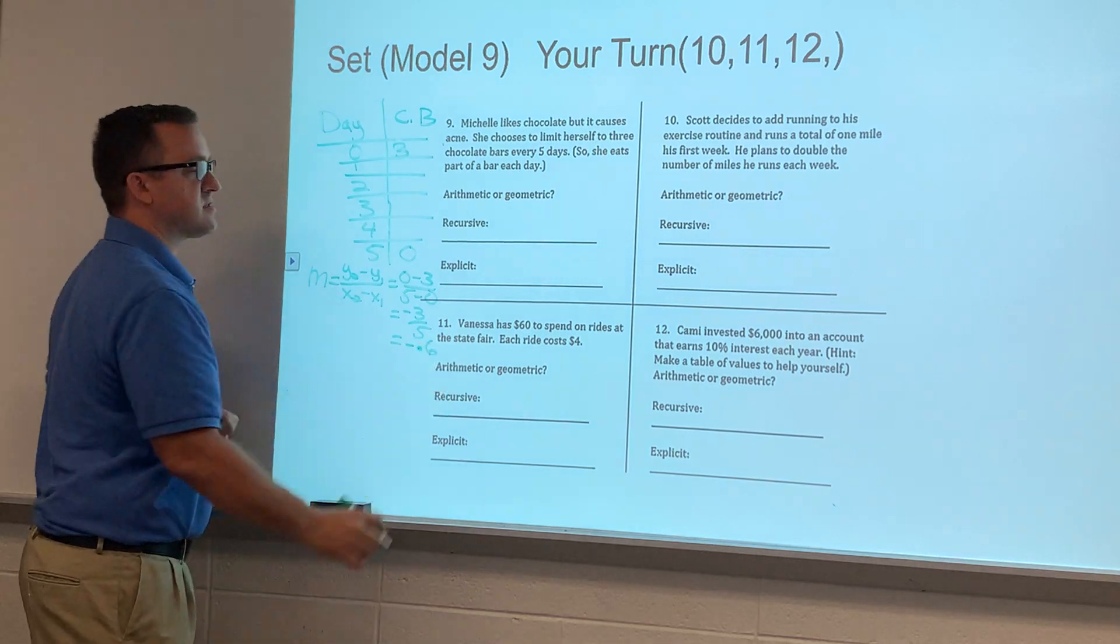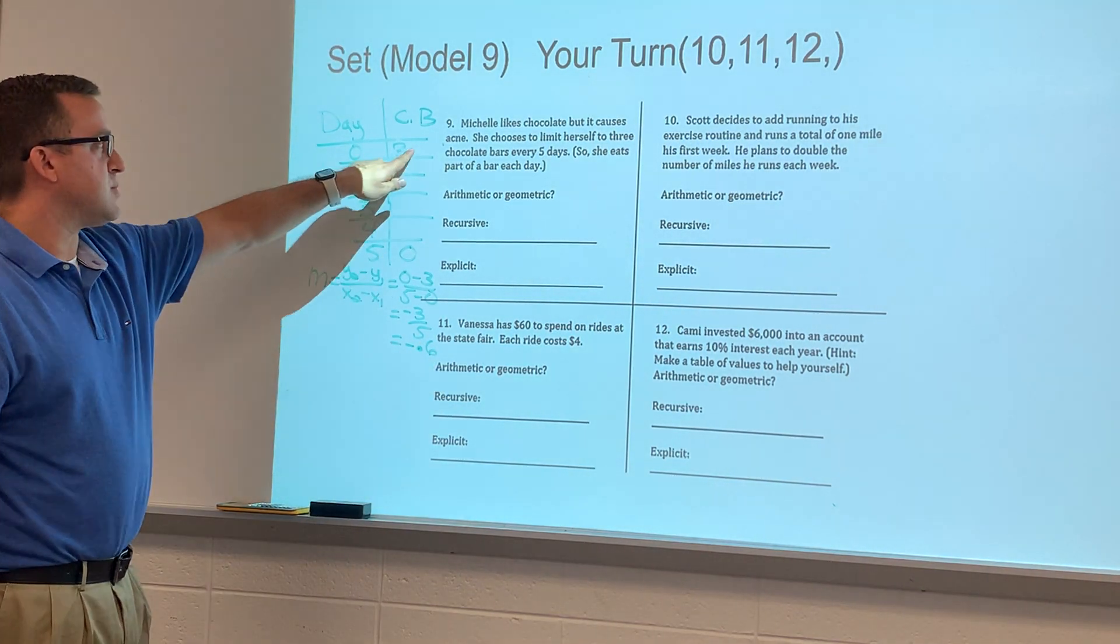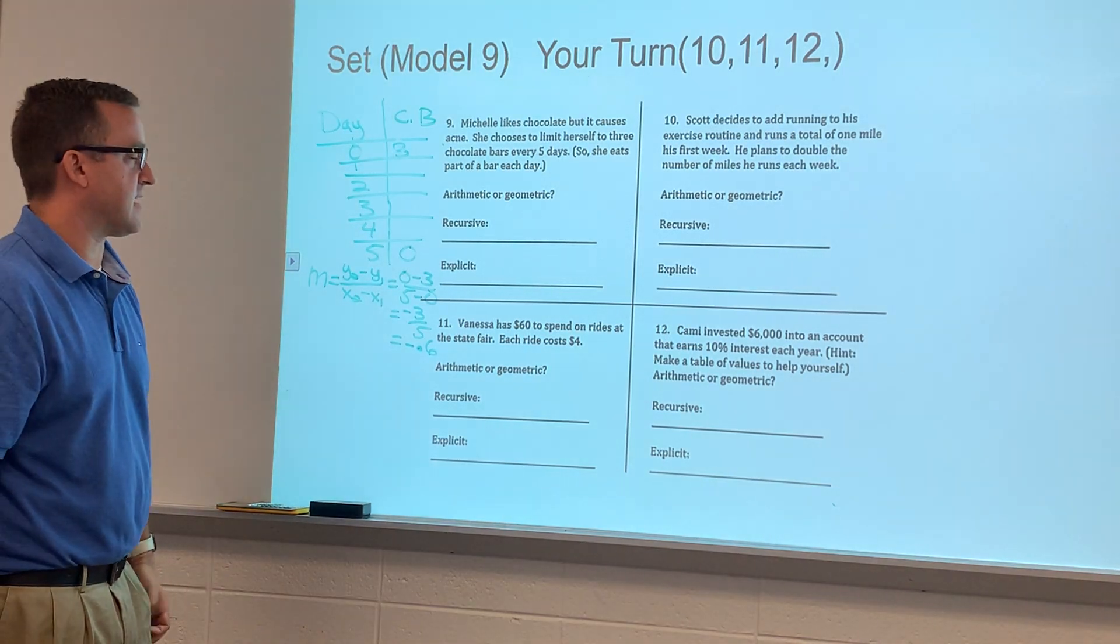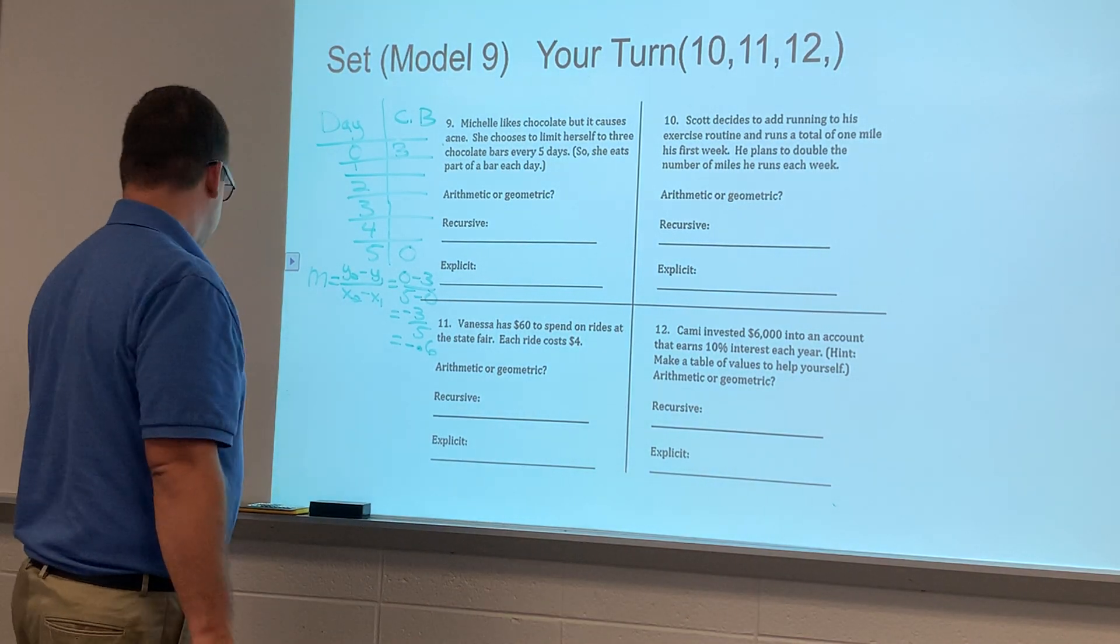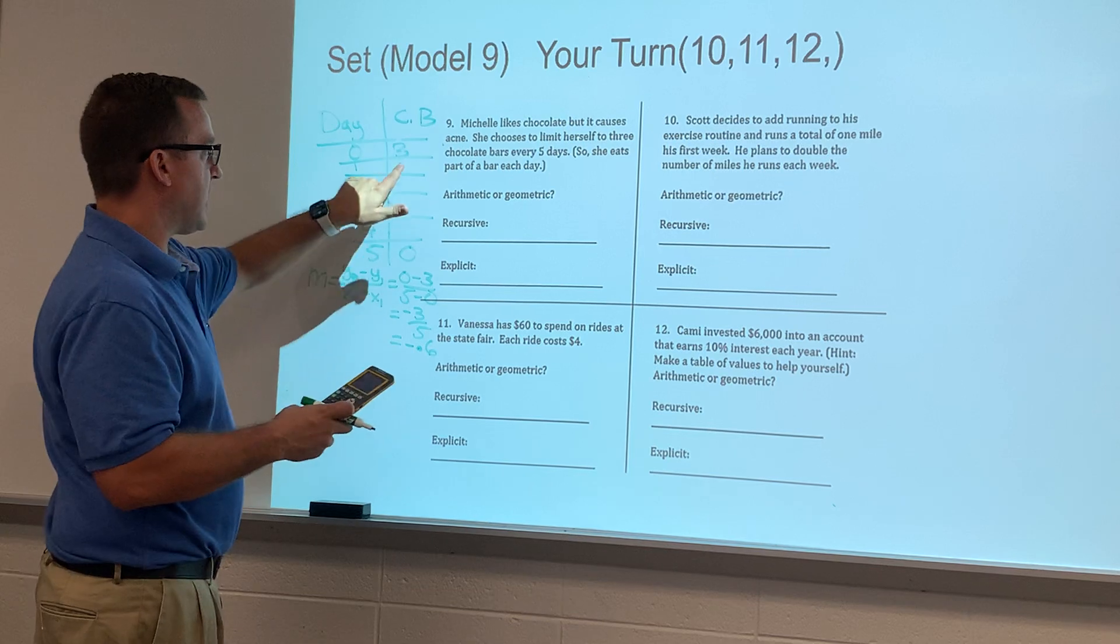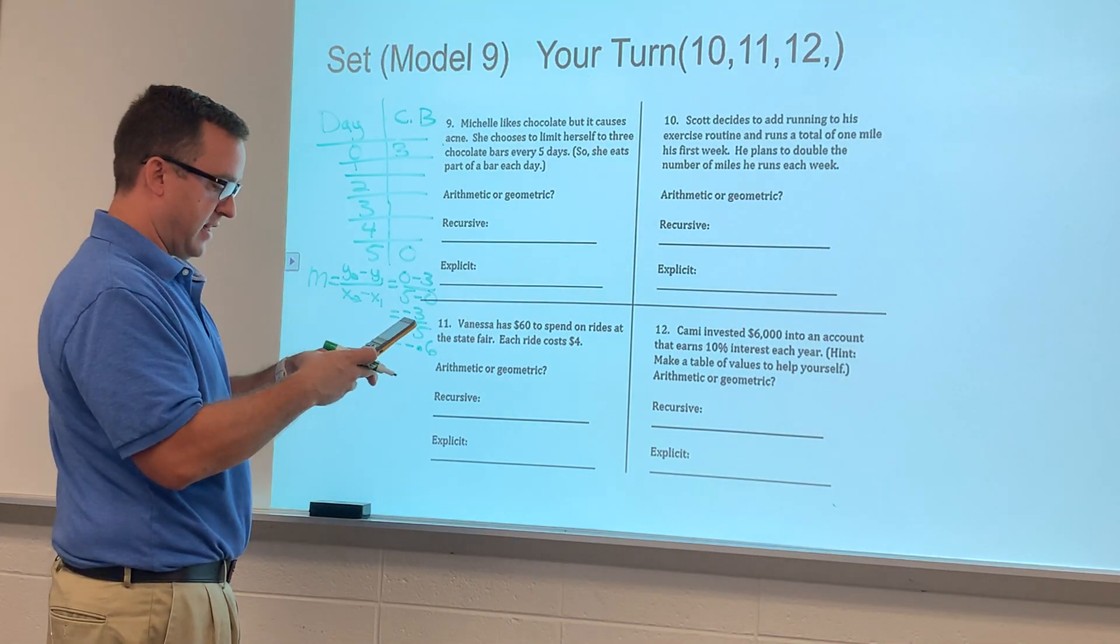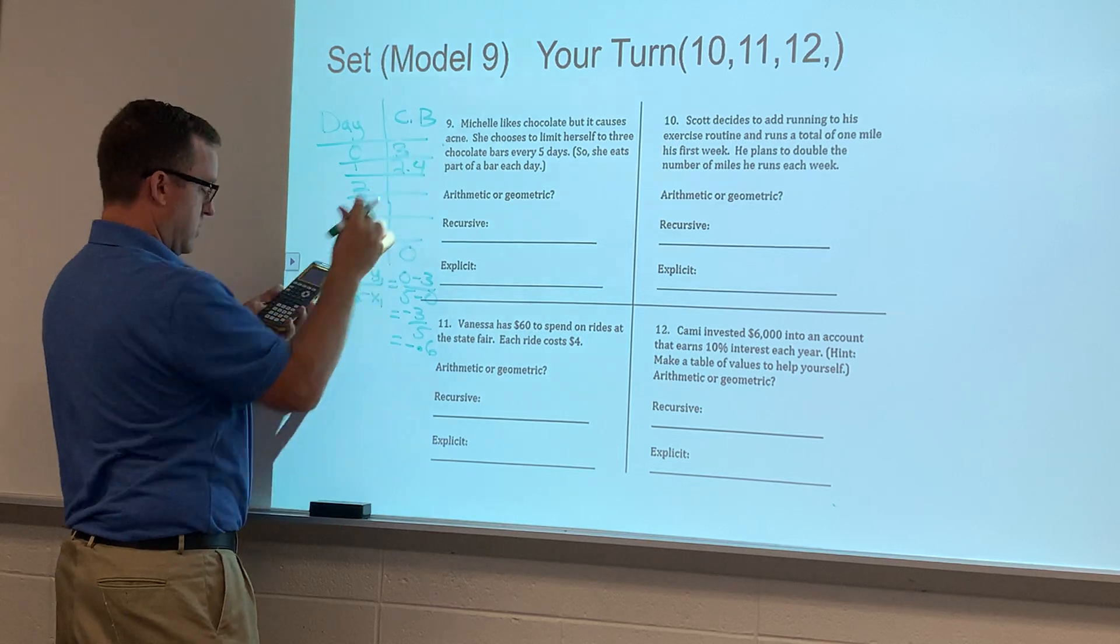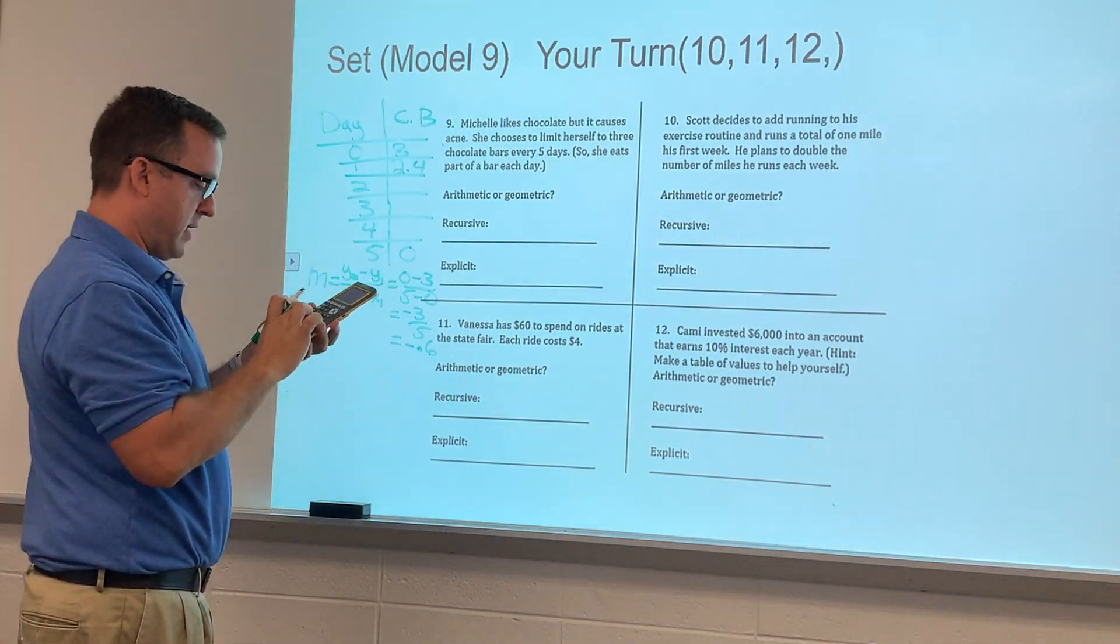And negative three over five is minus 0.6. So what we do is we start at three and then we subtract 0.6. To model that, let's double-check to make sure: three minus 0.6 is 2.4, 2.4 minus 0.6...